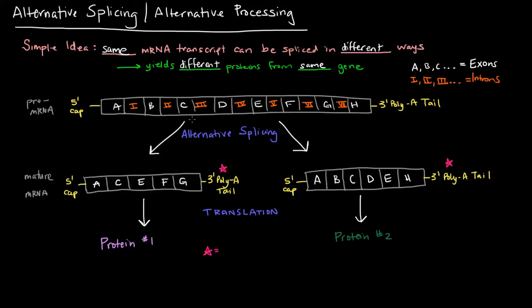This can be spliced in a variety of ways. I've only shown two here, but if alternative splicing occurs, maybe we'll take out some exons so that only exons A, C, E, F, and G show up in the mature mRNA.